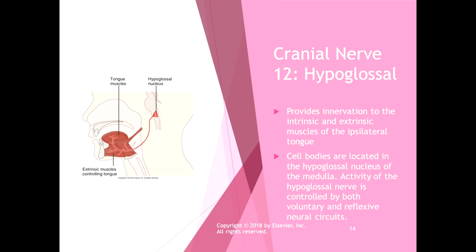The twelfth cranial nerve is the hypoglossal nerve. It provides innervation to the intrinsic and extrinsic muscles of the ipsilateral tongue. Just like everything in the brain, we have two of each of the 12 cranial nerves — the right hypoglossal nerve innervates the right side of the tongue and the left innervates the left. One clinical test is to have the patient stick out their tongue: if it deviates to one side, it indicates damage on that side. The cell bodies are in the hypoglossal nucleus in the medulla, and it is controlled by both voluntary and reflexive neural circuits.